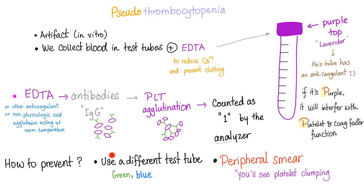Another way to prevent pseudo-thrombocytopenia is to do a peripheral smear — you will see the platelet clumping. You'll realize the patient is asymptomatic, and the low platelet count is because the machine is wrong. When you look under the peripheral smear and see platelets clumping together, that's pseudo-thrombocytopenia. Use a different test tube and the platelet count should be normal.